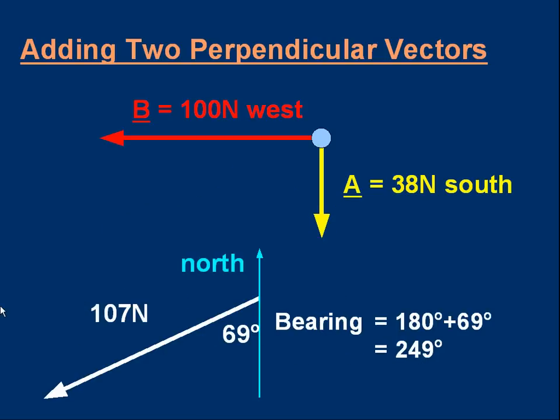To complete it, let's work out the bearing properly. There's our original two forces. The resultant of those two forces is a 107 newton force. The bearing is measured from north. So start at the north and go clockwise. That's 180 degrees to get south and another 69 degrees. So it's 249 degrees in total. That's the bearing. That's all there is to it.